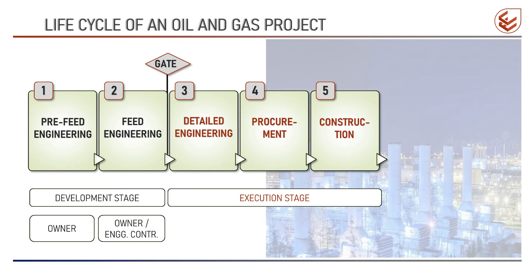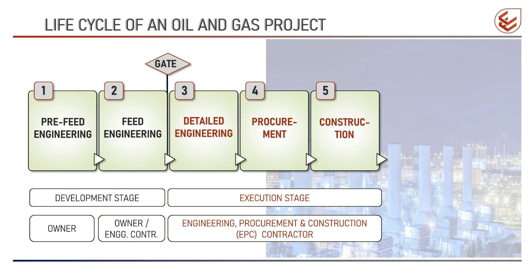Phases 3, 4, and 5 are the execution stages of a project. In phase 3, the engineering documents required for procuring equipment, materials, and services are prepared and issued. Detailed engineering drawings required for construction on site are developed and submitted. Also in this phase, procedures and manuals required for commissioning, operation, and maintenance of the plants and equipment are produced. In the procurement phase, equipment, materials, services, and resources are procured. Finally, fabrication, installation, construction, inspection, and testing are done on site in the construction stage. To curtail the project schedule, phases 3, 4, and 5 are executed in parallel.